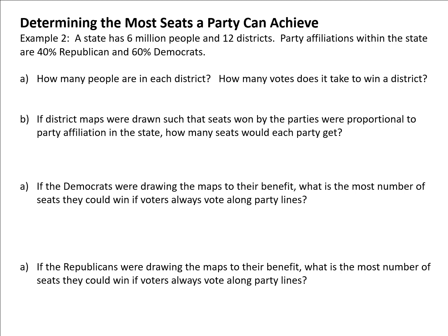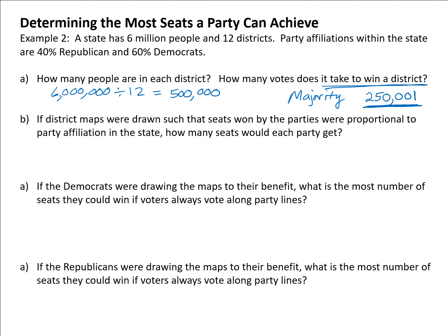Let's look at one more example: a state with 6 million people in 12 districts, with party affiliations of 40% Republican and 60% Democrat. How many people are in each district? 6 million divided by 12 equals 500,000 people per district. How many votes would it take to win a district? You need a majority of 500,000: half is 250,000, so you need at least 250,001 votes.